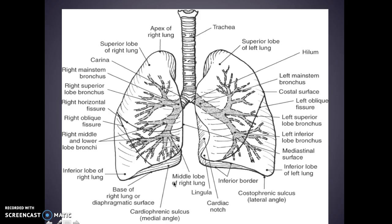Coming down, here's your trachea and this is your carina right here in the center. This is your superior lobe of your left lung. The hilum is where the lung and the trachea come together, so this is your hilum right here. I want you to know this is your left main stem bronchus coming down to your left superior and inferior lobes.